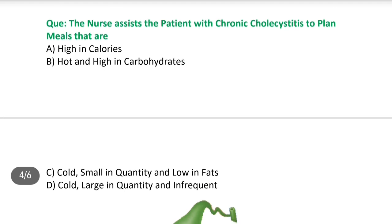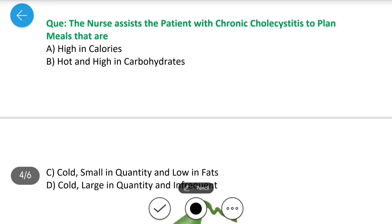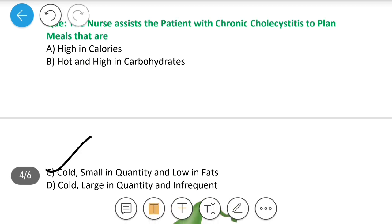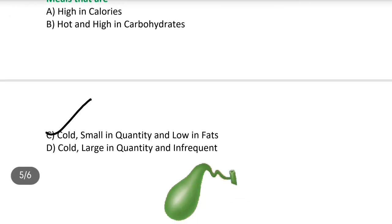Next question: The nurse assists the patient with chronic cholecystitis to plan a meal that is — A) high in calorie, B) hot and high in carbohydrate, C) cold, small in quantity and low in fat, D) cold, large in quantity and infrequent. Cholecystitis gallbladder का inflammation होना है. Answer is C — cold, small in quantity and low in fat. Fat की वजह से bile deposition में change आ जाते हैं, gallbladder irritated होती है और inflammation cause करती है, इसलिए patient को low fat diet देना सही रहता है.